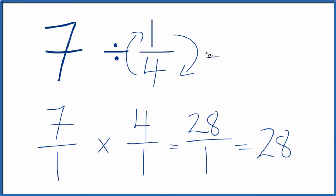So 7 divided by 1 fourth, that equals 28. If you multiply 28 times 1 fourth, you'll get 7.